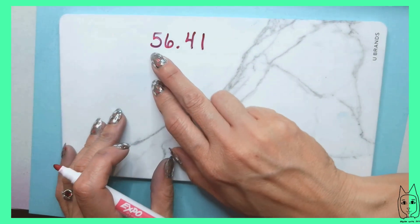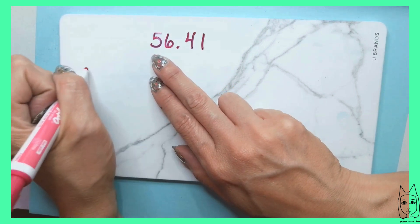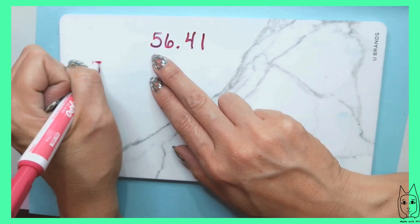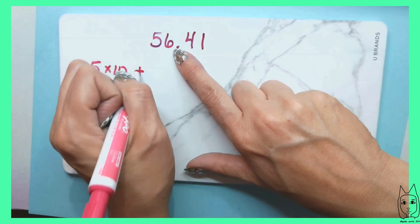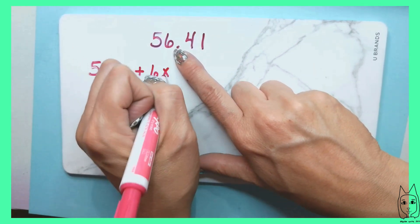You already know that the five is representing five tens, so this would be 5 times 10. The six we know is six ones, so that would be 6 times 1.